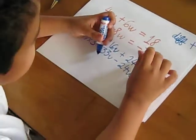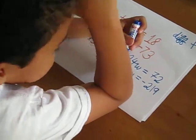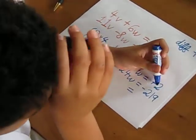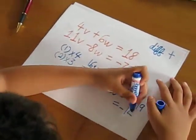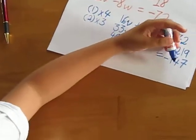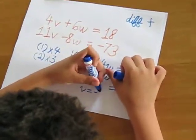Let's add our equations. We get 49v. The w's will disappear. 72 plus minus 219 equals minus 147. Dividing both sides by 49, v is minus 3.